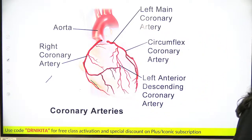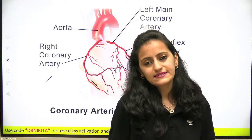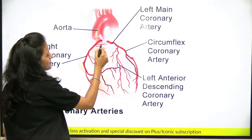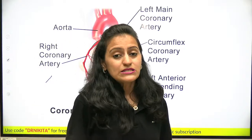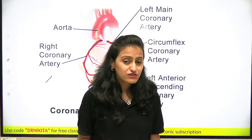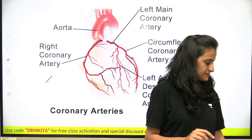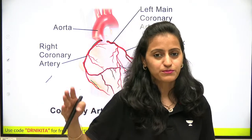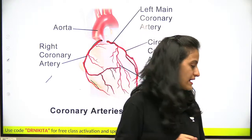Now talking about coronary circulation. The coronary arteries arise from the ascending aorta — you have the right coronary artery and the left coronary artery coming from the aortic sinus. If the question asks the first branch of the aorta, the answer is coronary artery. If it asks the first branch of the aortic arch, that is different — BCS: brachiocephalic, common carotid, subclavian. Please read the question very carefully.